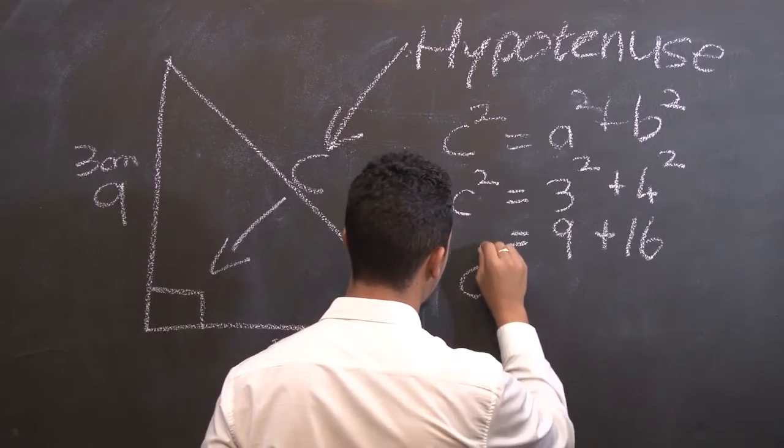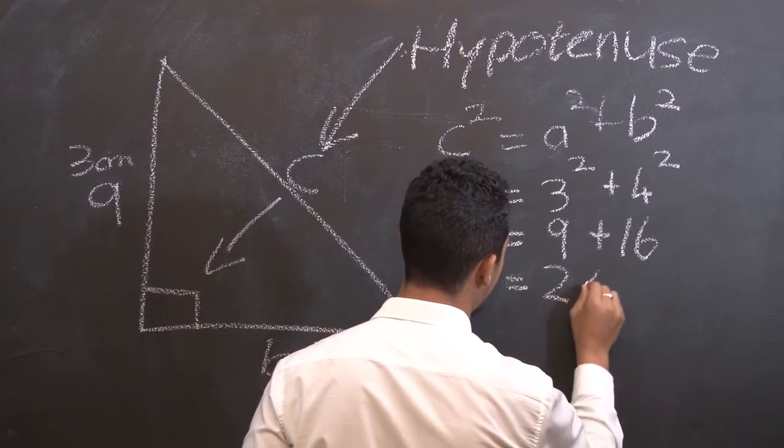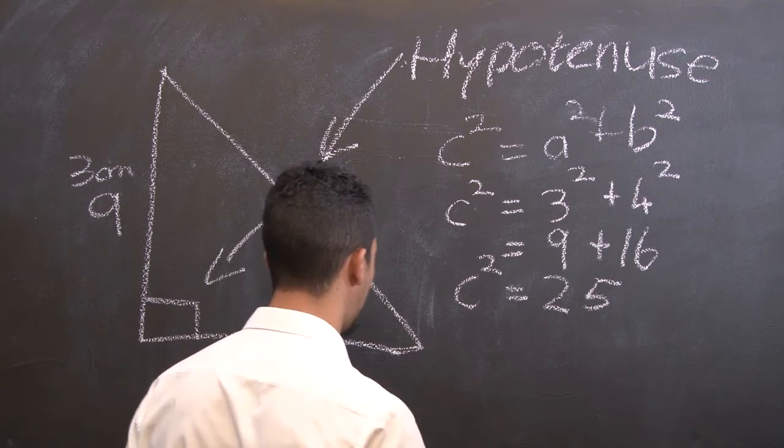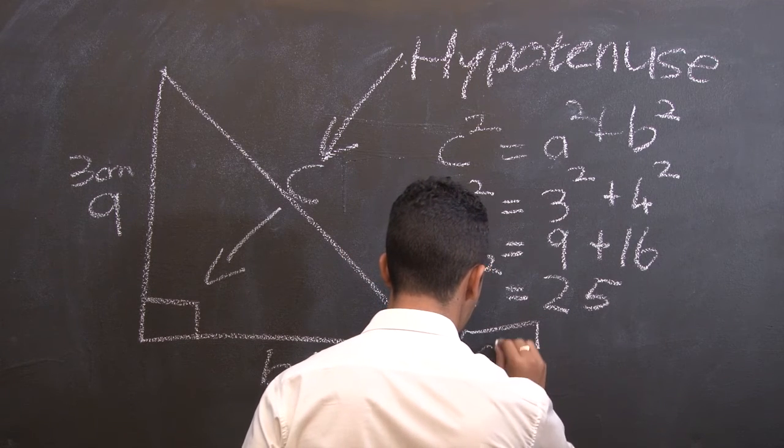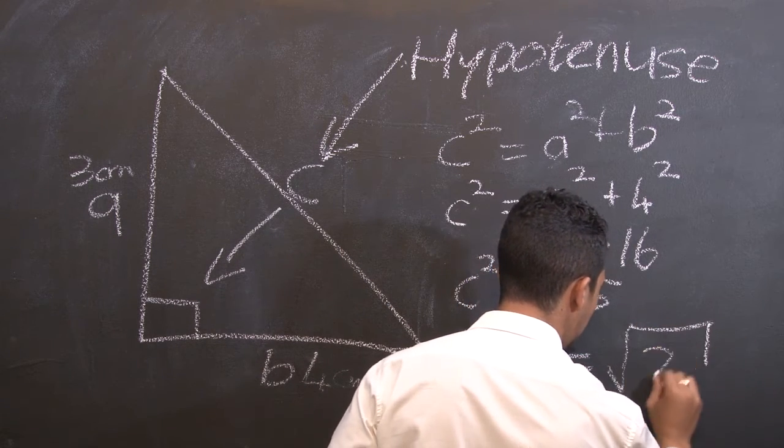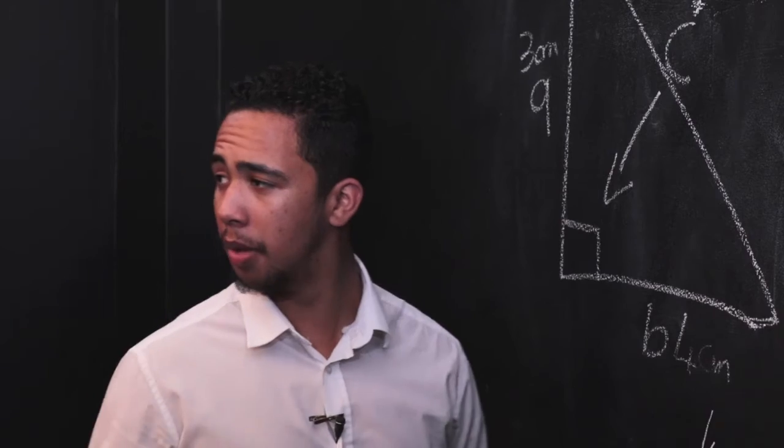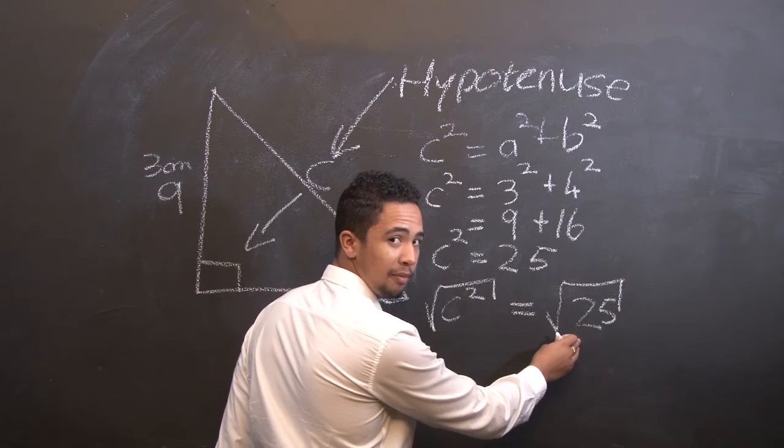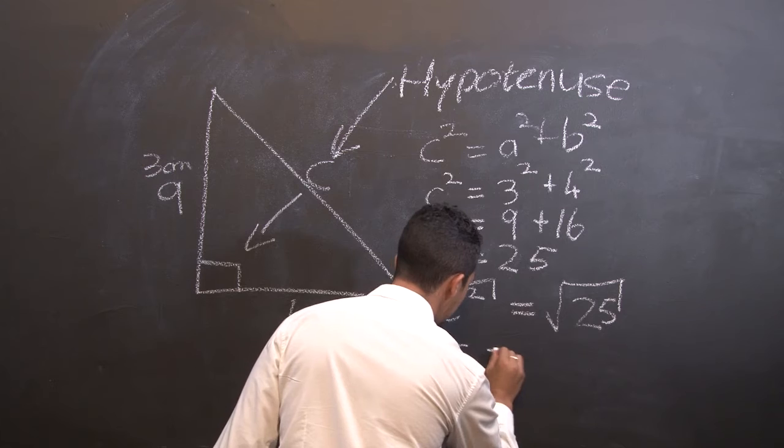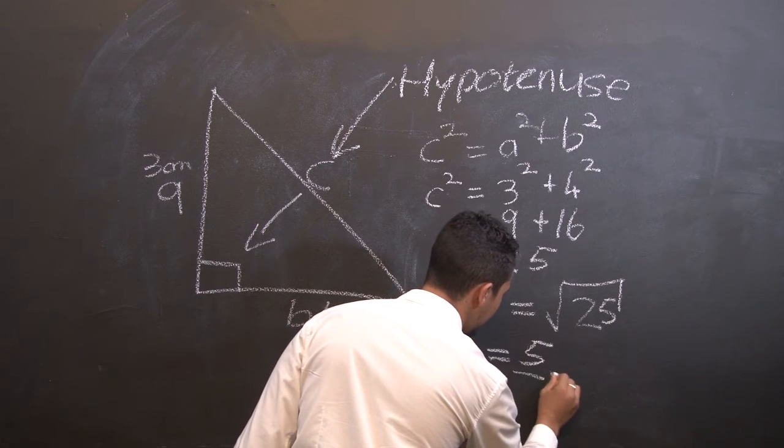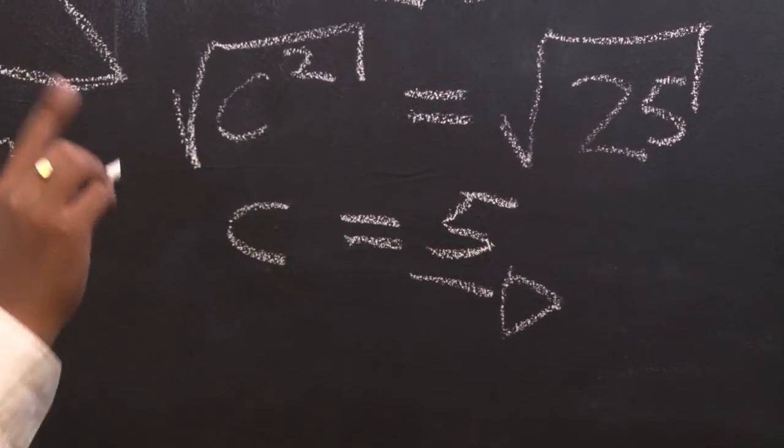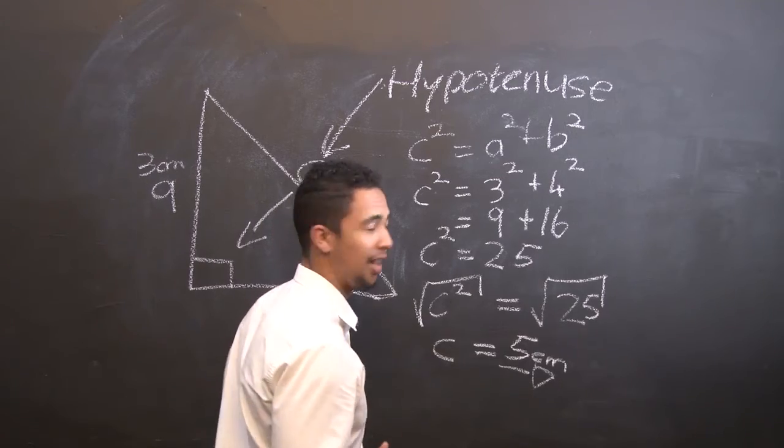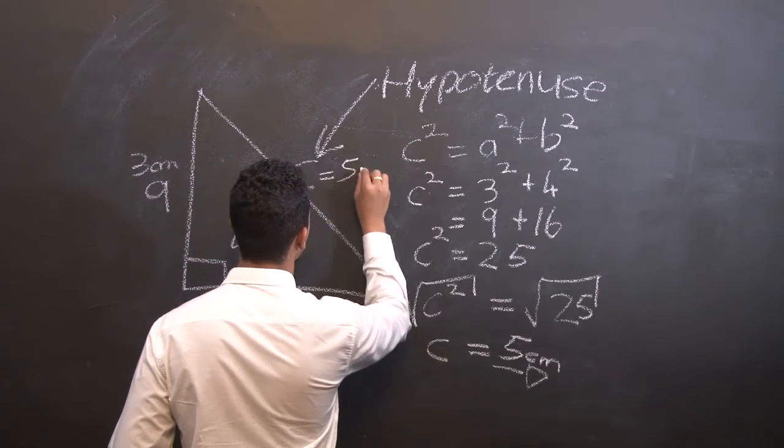Therefore, C squared is equal to 25. So in our rule of math, what we do on the left, we do on the right. So let's square root C squared. Therefore, we square root 25. Remember, square root is the opposite of a square. Therefore, something times something is equal to 25. If you type this into your calculator, C is equal to 5 centimeters. Very important, guys, don't forget it. Now we can say that the length of C is equal to 5 centimeters.